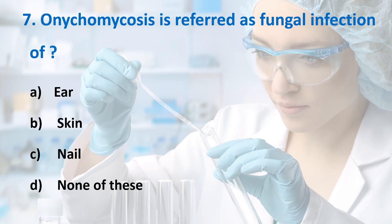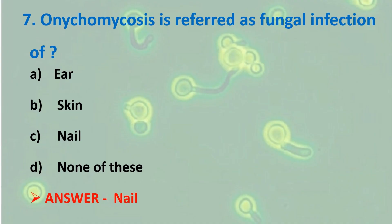Seventh question: Onychomycosis is referred to as fungal infection of? Options: Ear, Skin, Nail, None of these. Answer is Option C, Nail. Onychomycosis is caused by various fungi, including dermatophytes — Trichophyton rubrum, Trichophyton mentagrophytes, Epidermophyton floccosum — as well as Candida albicans, Candida parapsilosis, Aspergillus, and Fusarium species.